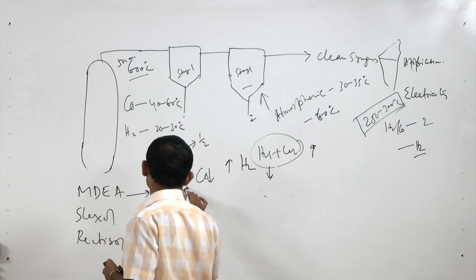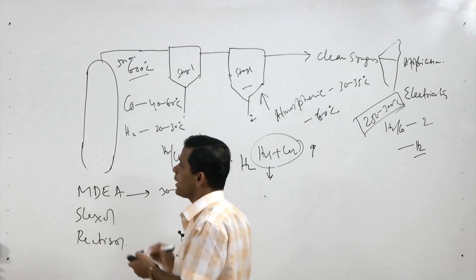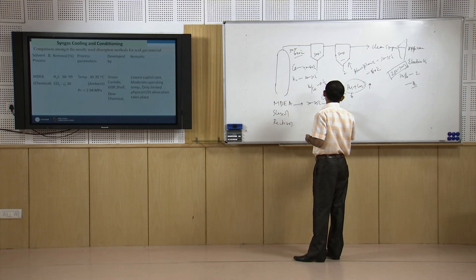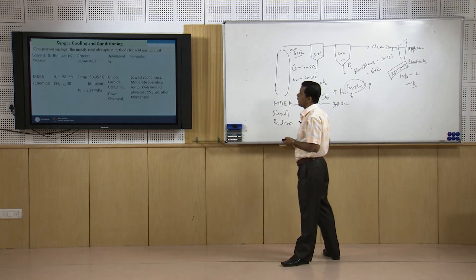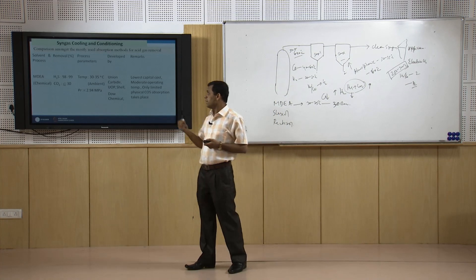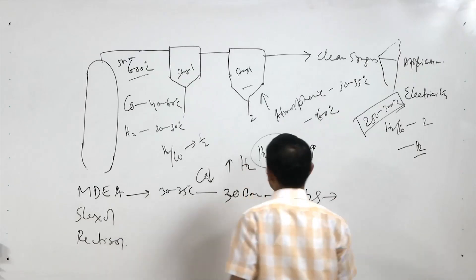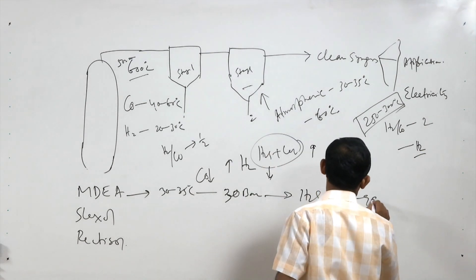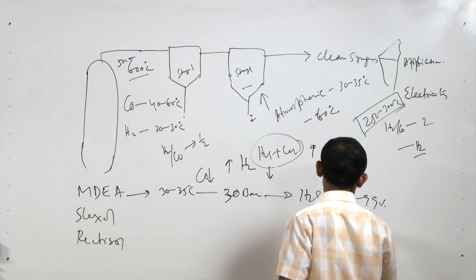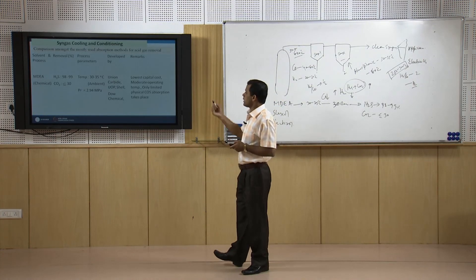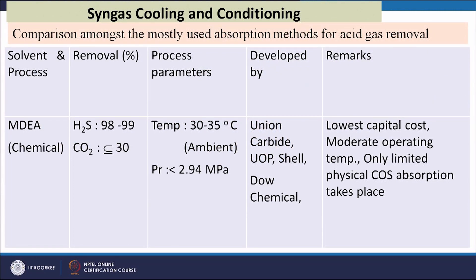MDEA operates at 30 to 35 degrees centigrade and a pressure of around 30 bar (2.94 MPa), giving 98 to 99 percent H2S removal and up to 30 percent CO2 removal. This chemical absorption method was developed by Union Carbide, UOP, Shell, and Dow Chemicals, and is known for its low capital cost. Selexol operates at below zero — minus 4 to minus 7 degrees centigrade.